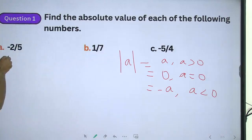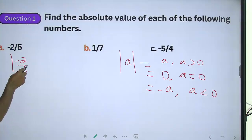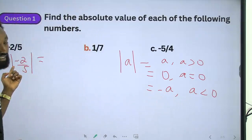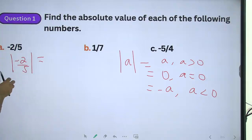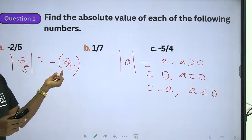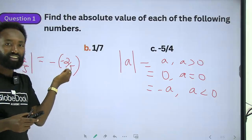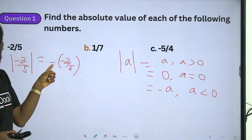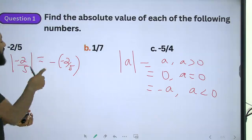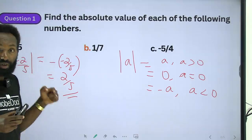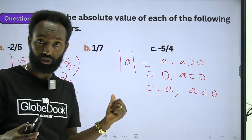Let's try. Minus 2 over 5. The absolute value of minus 2 over 5: since minus 2 over 5 is less than 0, we use the definition where a is less than 0, so the absolute value equals minus a. So the absolute value of minus 2 over 5 equals minus of minus 2 over 5, which gives us 2 over 5.